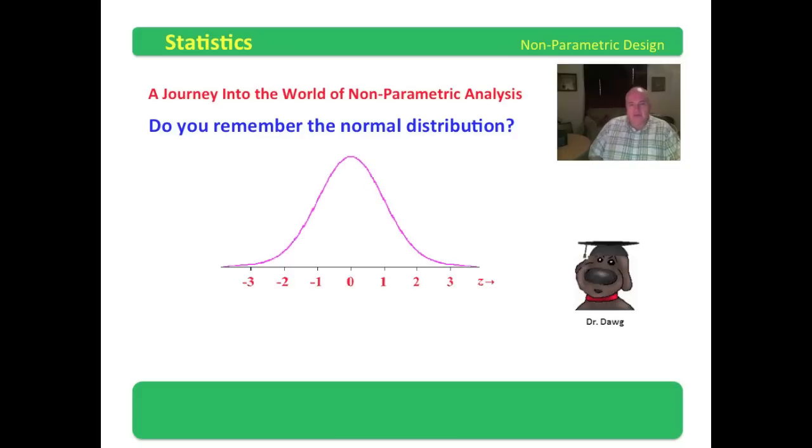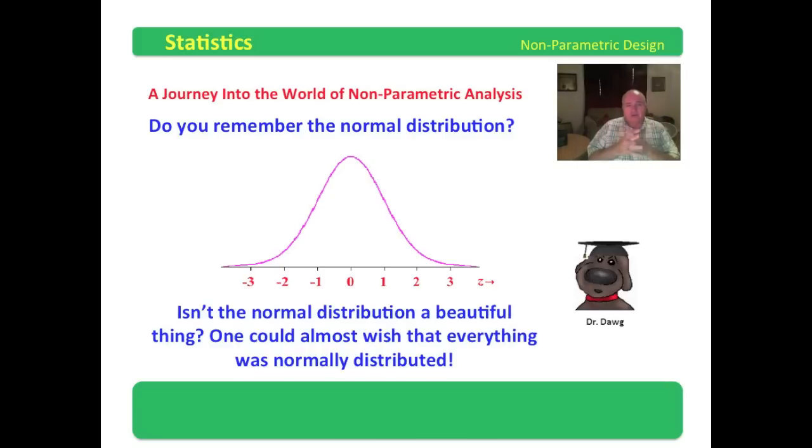Here's a little normal distribution curve you would recognize immediately that this is the standard normal distribution curve. You see that z-score? And then we have so many standard deviations on each side, and it is just beautifully symmetrical and just fits right where it's supposed to. Isn't the normal distribution a beautiful thing?